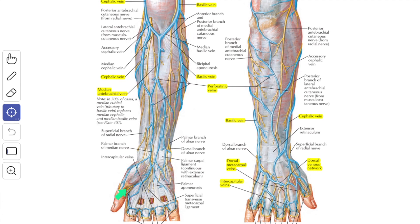The radial side of the palm including the lateral three and a half fingers is supplied by the median nerve. The center of the palm is innervated by the palmar branch of the median nerve, which perforates the deep fascia proximal to the flexor retinaculum.